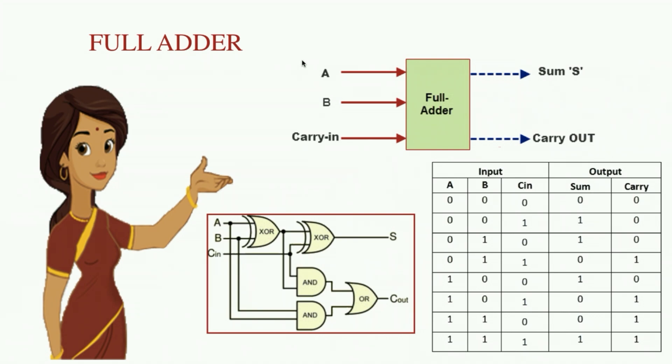It is called as a full adder because it adds two binary digits and a carry in digit to produce a sum and a carry output. Therefore it has three inputs and two outputs. This is the corresponding truth table and this is the corresponding logic circuit diagram of a full adder circuit.